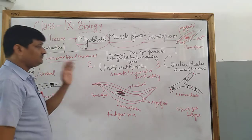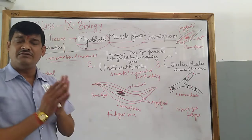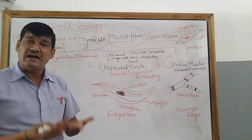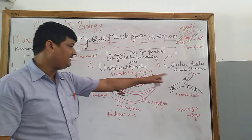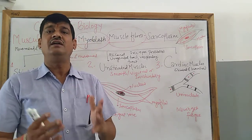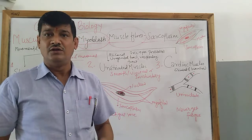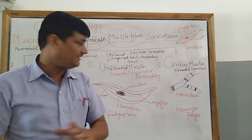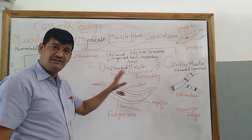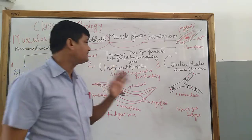Unstriated muscles are also known as visceral muscles or involuntary muscles. They are called visceral muscles because these muscles are present in our visceral organs. They are called involuntary muscles because these muscles are not under our willpower or our control. Their location in our body system is primarily in the alimentary canal.